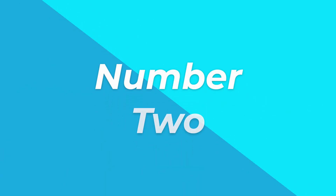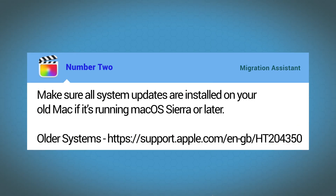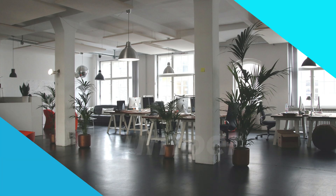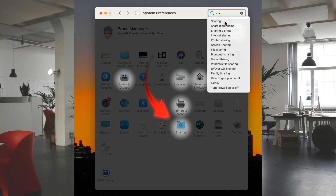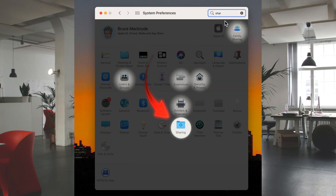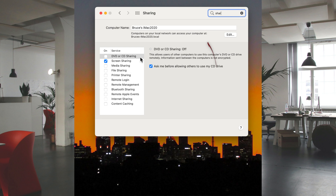Number two, make sure all system updates are installed on your old Mac if it's running macOS or later. If it's older, there's a link in the description below for an Apple support page that'll help you out. Number three, on the old Mac select Sharing in System Preferences and make sure a name appears in the Computer Name field.